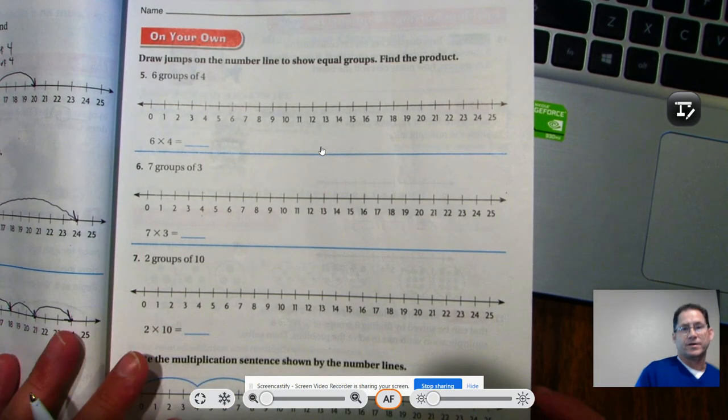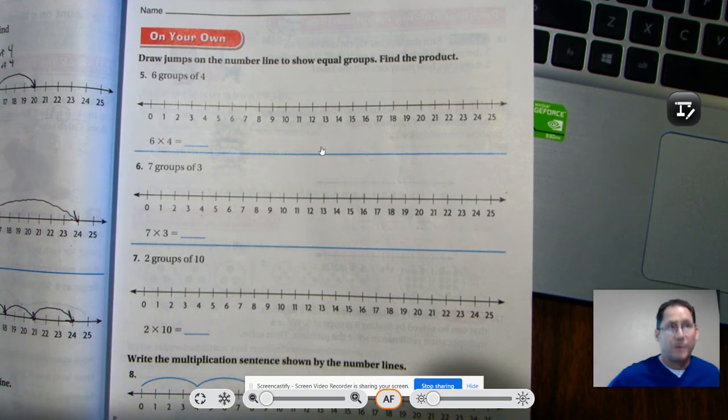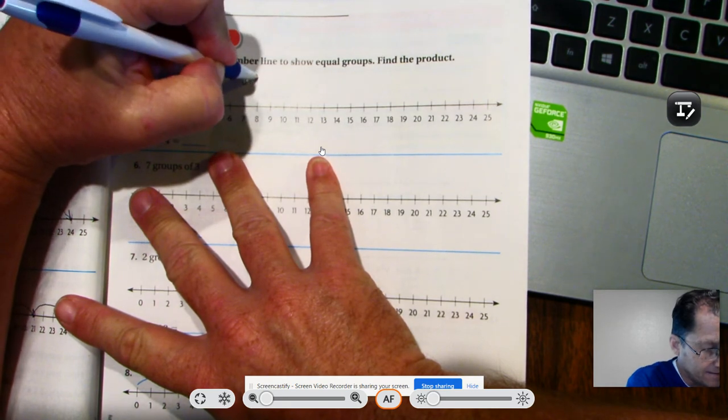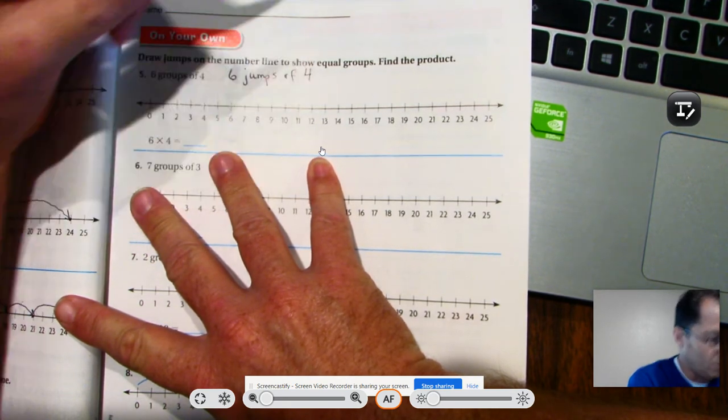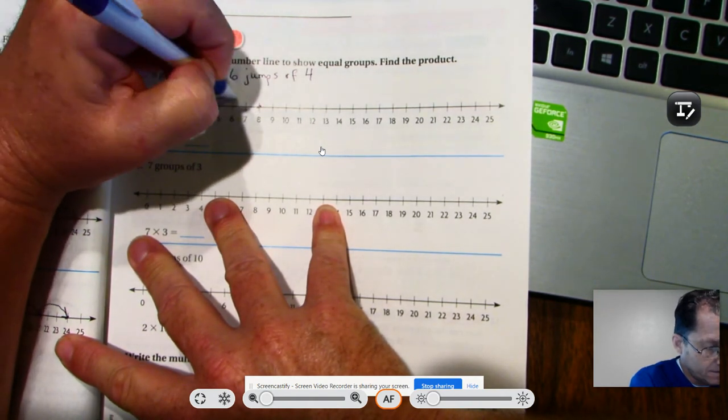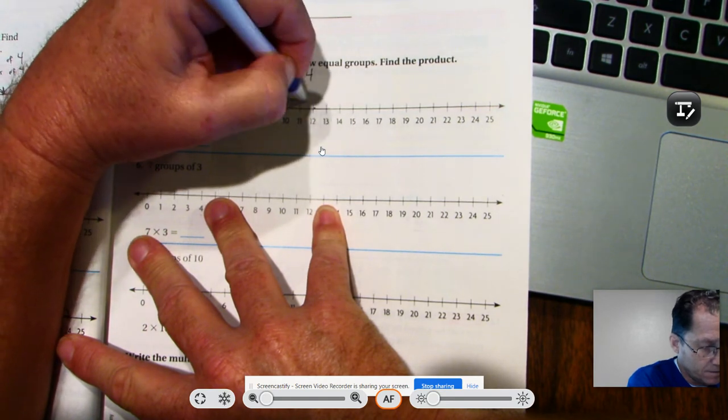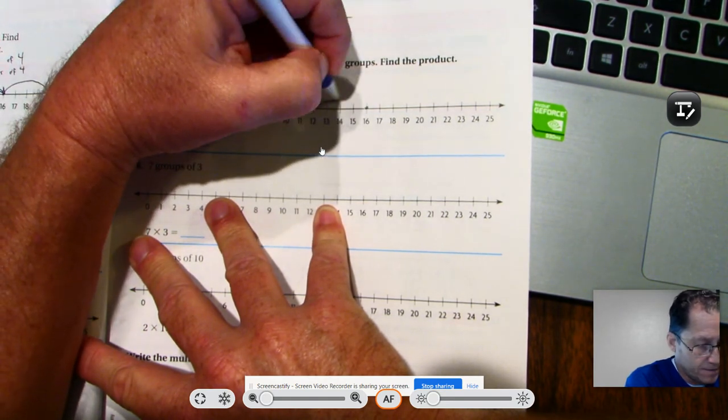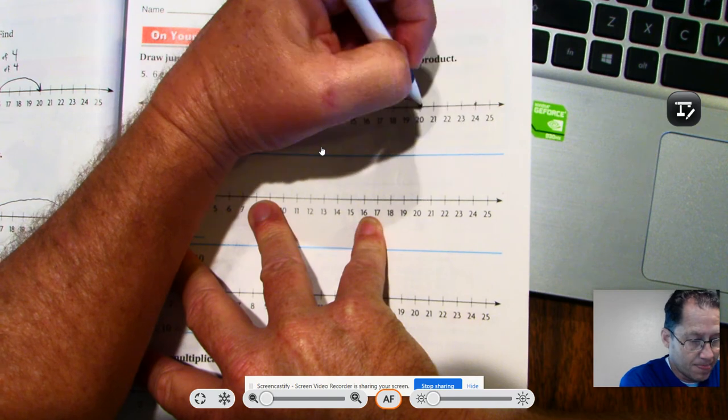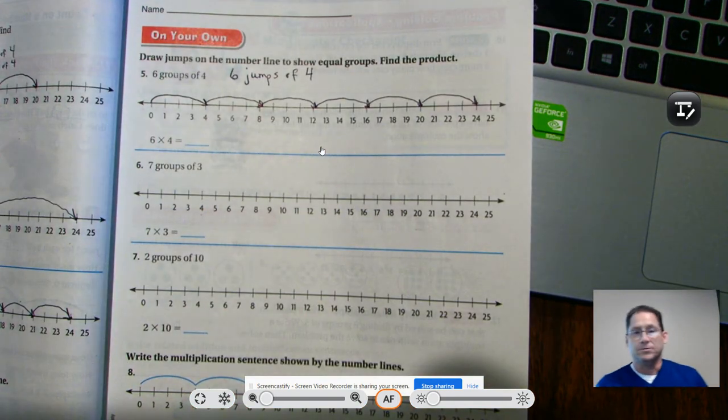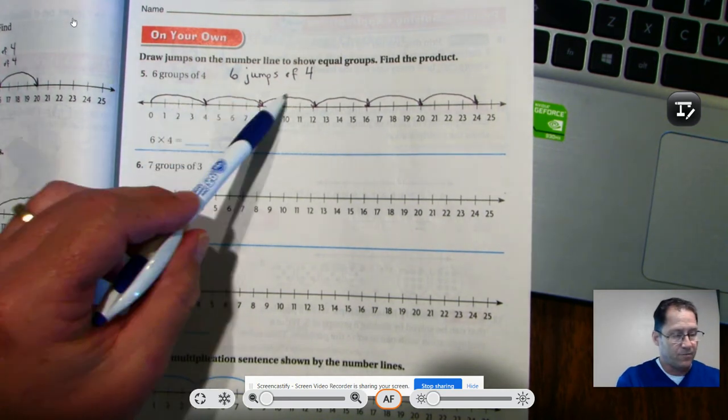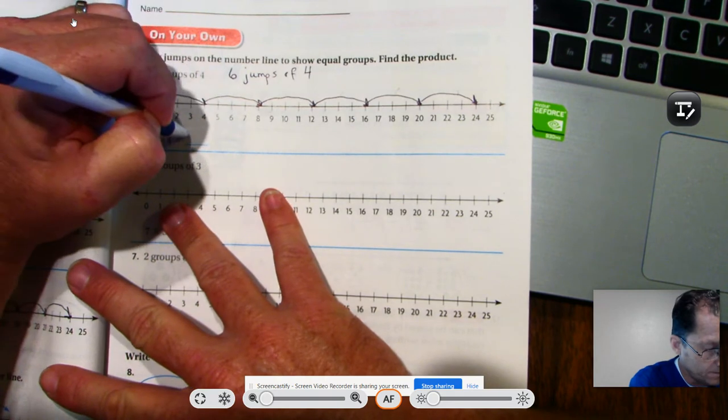Draw jumps on the number line to show equal groups. Find the product. Remember the product is the answer to a multiplication problem. 6 groups of 4 is the same thing as saying 6 jumps of 4: one, two, three, four, five, six. So just make sure you've done 6 jumps: one, two, three, four, five, six. 6 jumps of 4 equals 24.